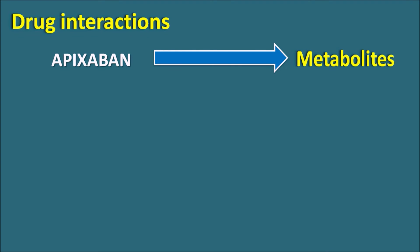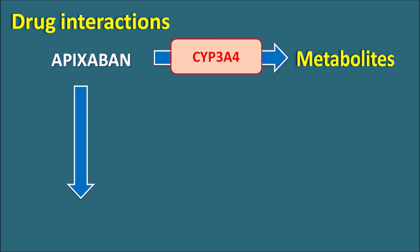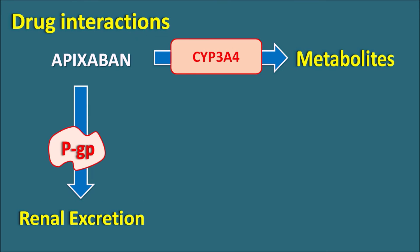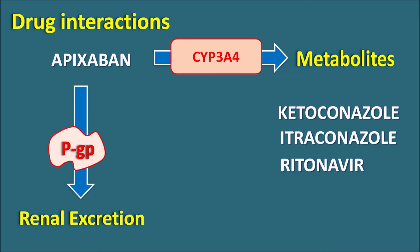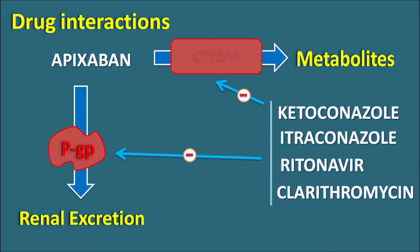Drug interactions should be thoroughly checked when apixaban is co-administered with other therapeutic drugs, particularly at the pharmacokinetic level. Apixaban is metabolized in the liver by cytochrome P450, specifically CYP3A4. Apixaban is also excreted through the renal system and is a substrate for P-glycoprotein, an efflux pump that increases secretion of apixaban into the renal tubules. Drugs like ketoconazole, itraconazole, ritonavir, and clarithromycin are strong inhibitors of CYP3A4 and also inhibit P-glycoprotein, elevating serum levels of apixaban and increasing bleeding risk.